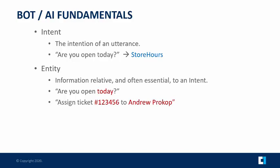The next big concept is the entity. Think of the entity as a modifier of an intent — information that is relative and often essential to an intent. 'Are you open today?' can map to store hours, but 'today' is very specific because it's different from 'tomorrow,' 'Saturday,' or 'Thanksgiving day.' So the intent can still be store hours, but now I have a day-of-week entity. Another example: I build a trouble ticket system where I can say 'assign ticket 12345 to Andrew Prokop.' Here the intent is assign ticket, and I have two entities: the ticket number and the assignee.